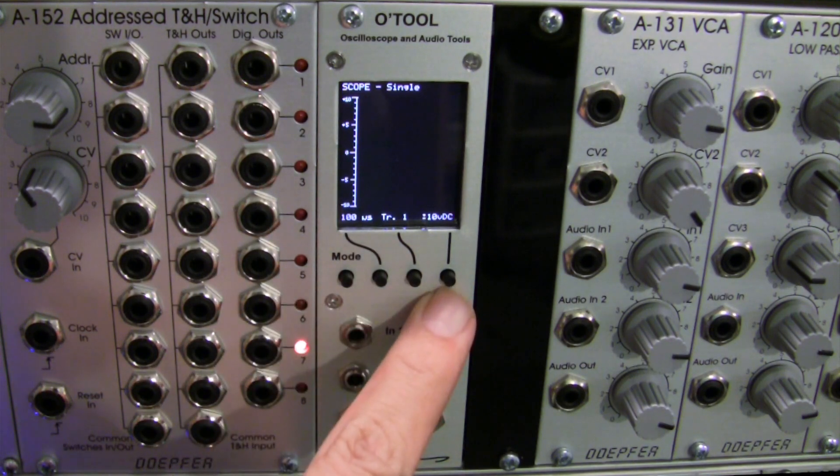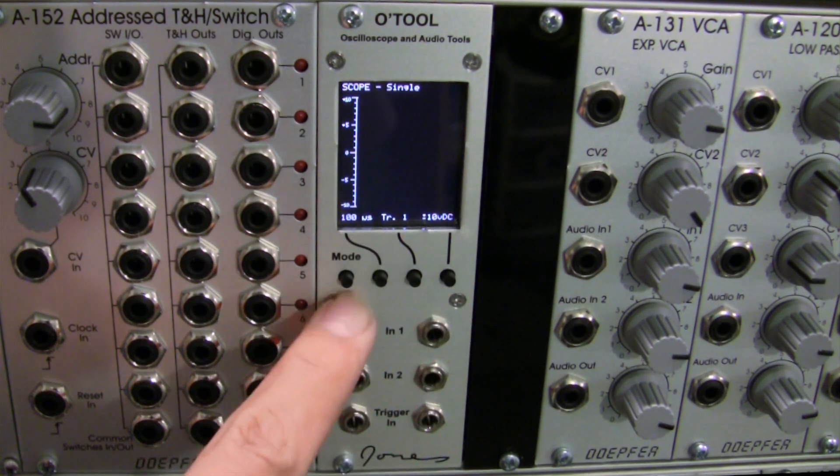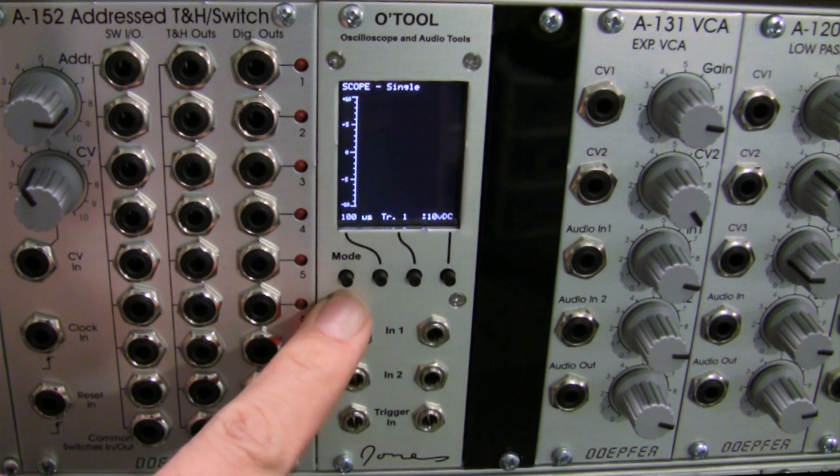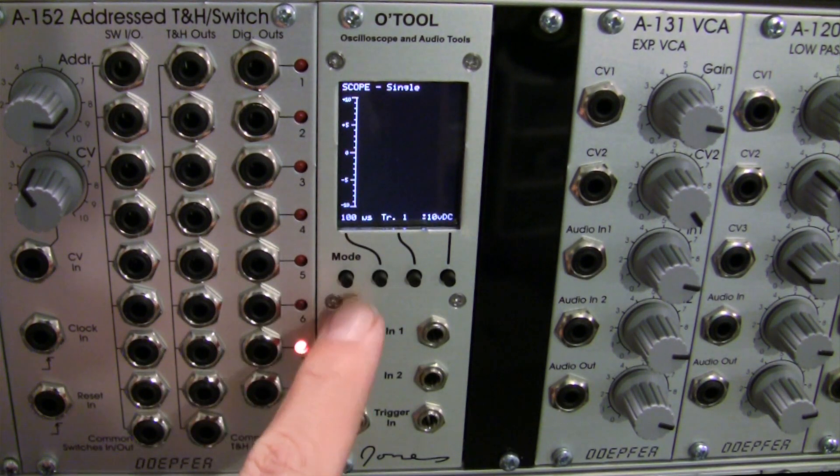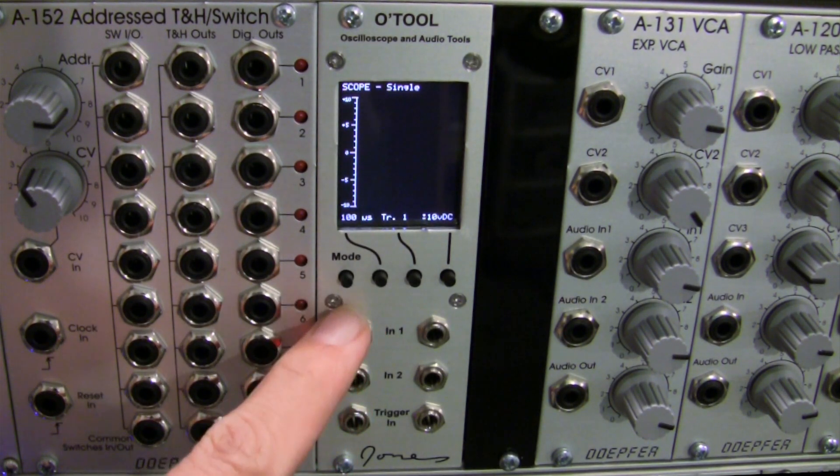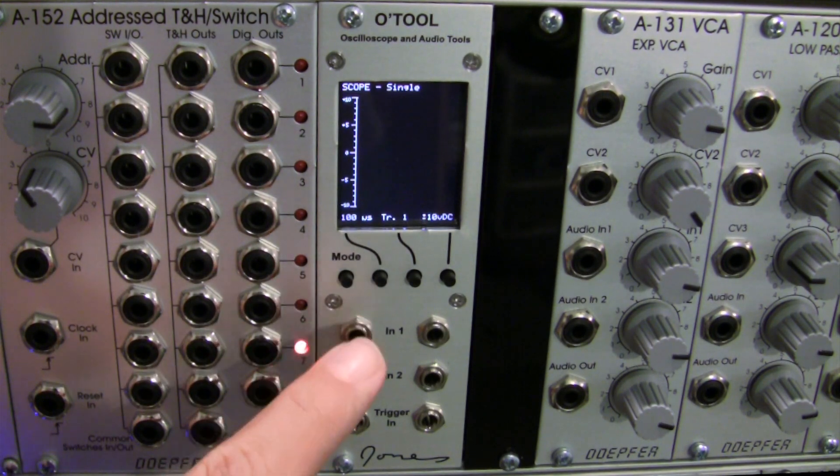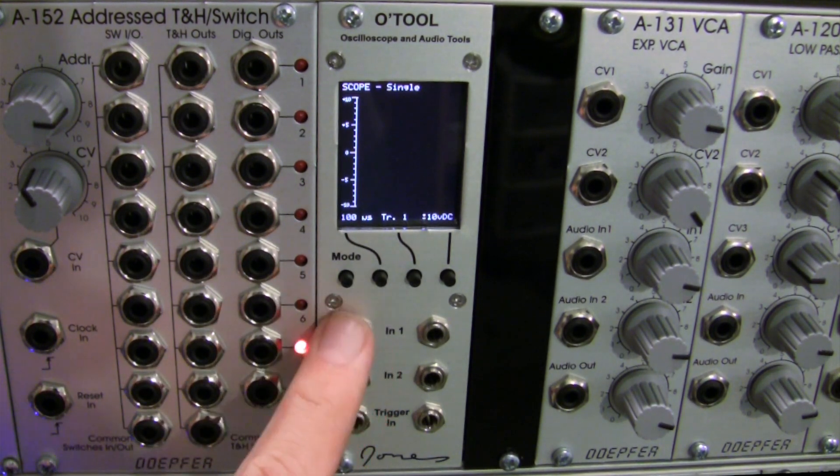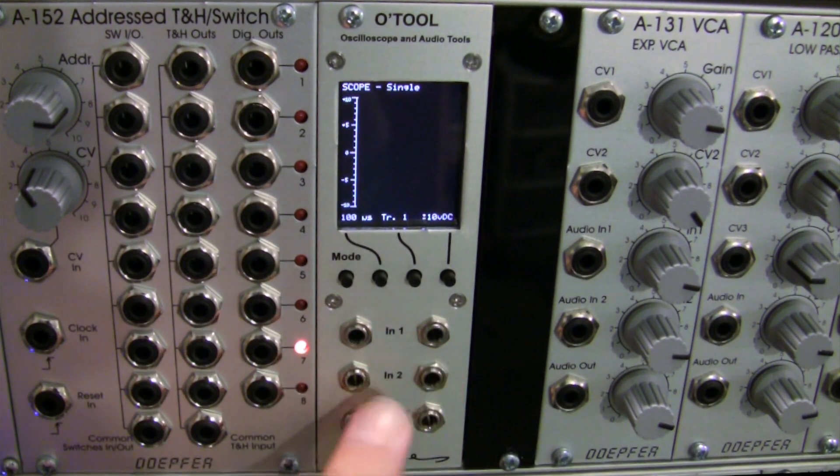These four buttons are going to allow you to move through the various modes as well as change parameters within those modes. Right below that, you have a series of three jacks going down and they're tied in rows. So like this jack is tied to this jack, this jack to this jack, this jack to this jack.